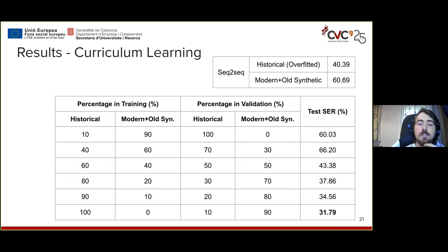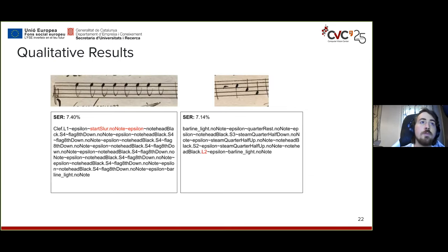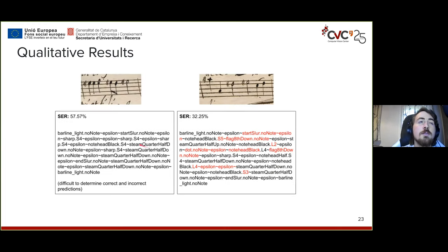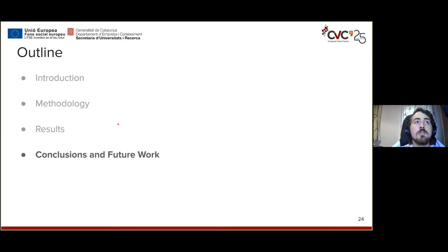The final symbol error rate obtained with this curriculum strategy is about 31.8%, considerably improving results and overcoming the BLSTM+CTC baseline. Qualitatively, common mistakes include confusing slurs with flags, wrong pitches a few steps off, and errors on very dense samples or those with staff lines that are dropped toward the edges of the image.